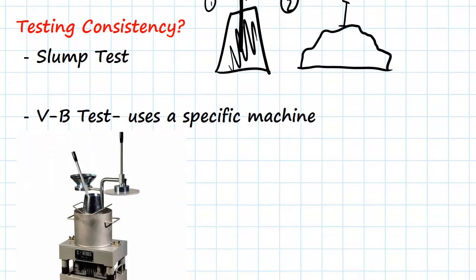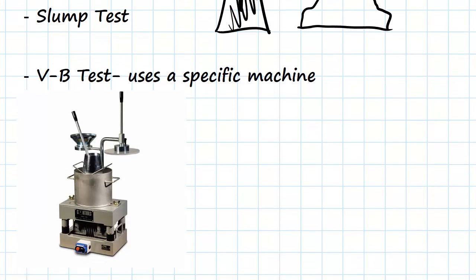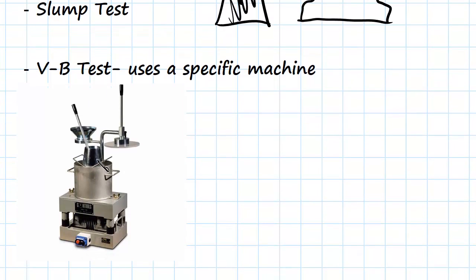Something a bit more fancy is called a VB test which uses this specific machine. So you can see there's kind of like this cone thing here, there's a rod, that's the rod which is going to be pushed into the mixture 25 times.